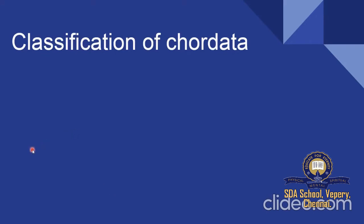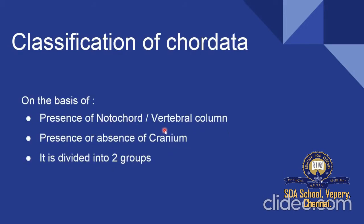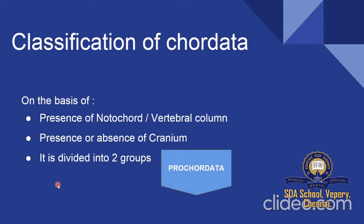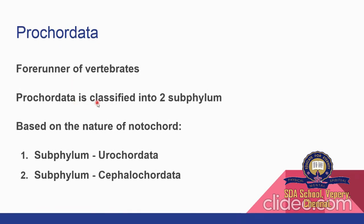Now we see the classification of Chordata. On the basis of presence of notochord, vertebral column, and presence or absence of cranium, Chordata is divided into two groups: Prochordata and Vertebrata. Prochordata are considered the forerunners of vertebrates. Prochordata is classified into two subphyla: Subphylum Urochordata and Subphylum Cephalochordata.